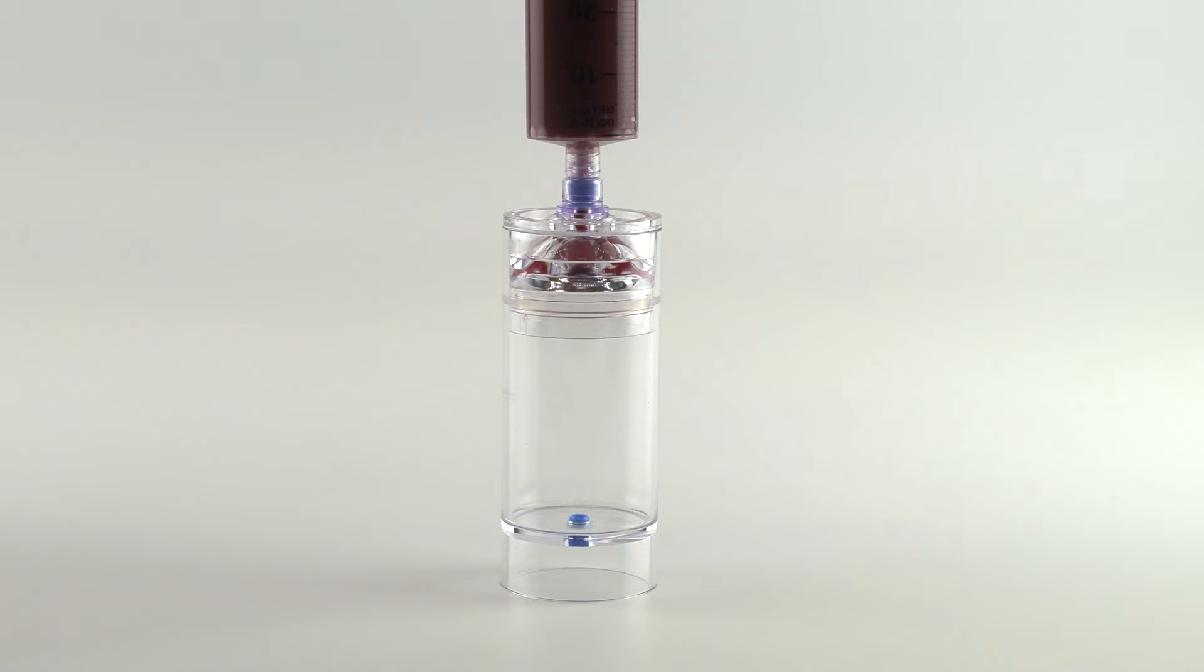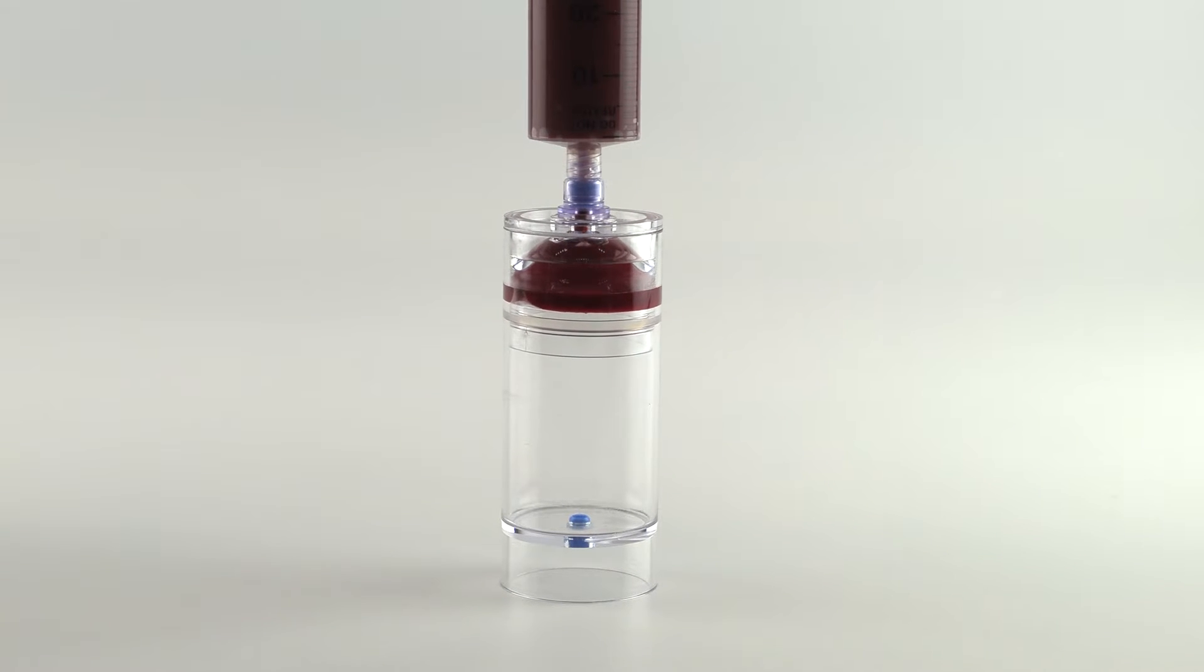Attach the 60 milliliter blood syringe to the needleless port of the separator device and slowly inject the anticoagulated blood.